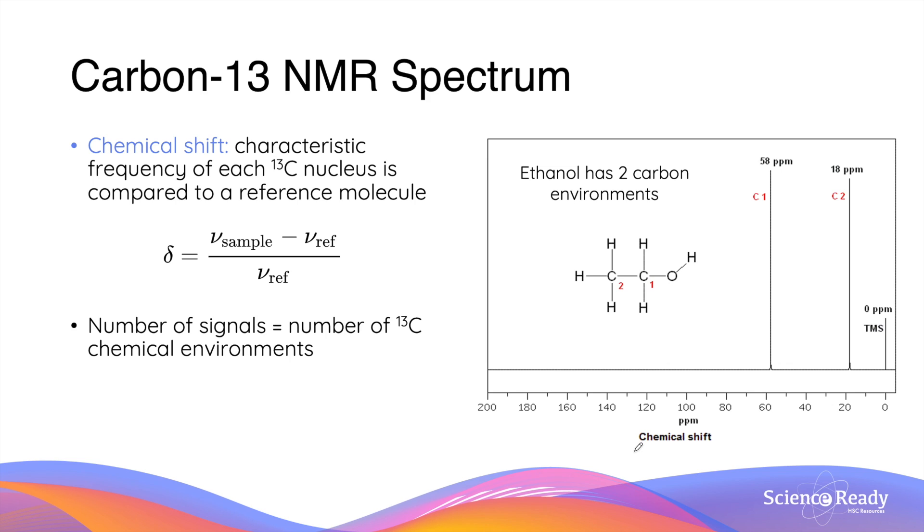Let's first talk about the carbon-13 NMR spectrum which contains information that helps us determine the structure of organic compounds. The x-axis of carbon-13 NMR spectrum is labeled with chemical shift which is calculated by using the characteristic frequency of the radio wave that is resonant with each carbon-13 nucleus depending on its chemical environment.